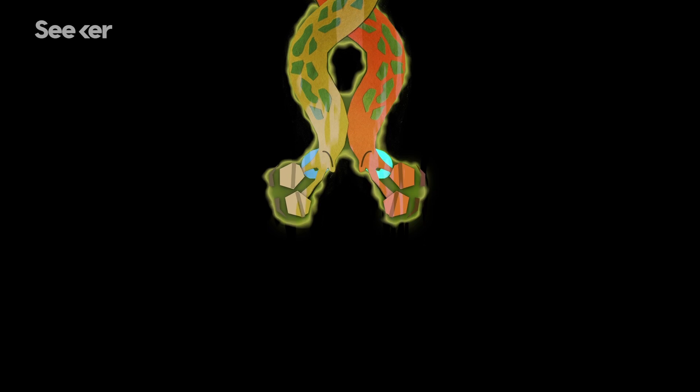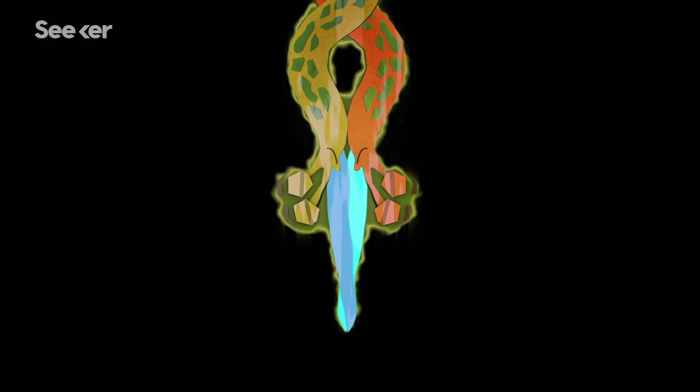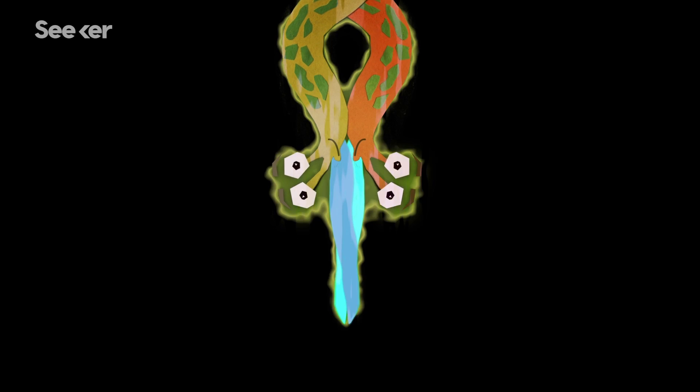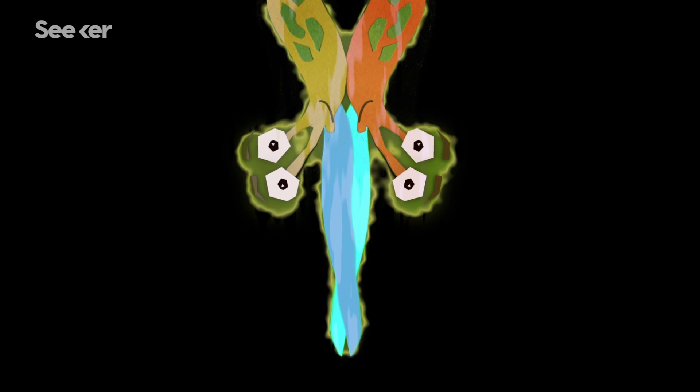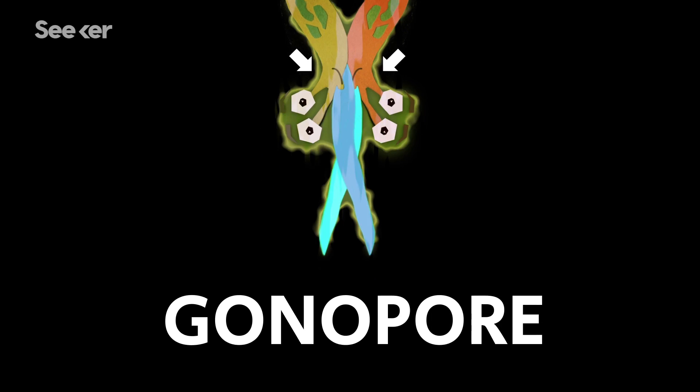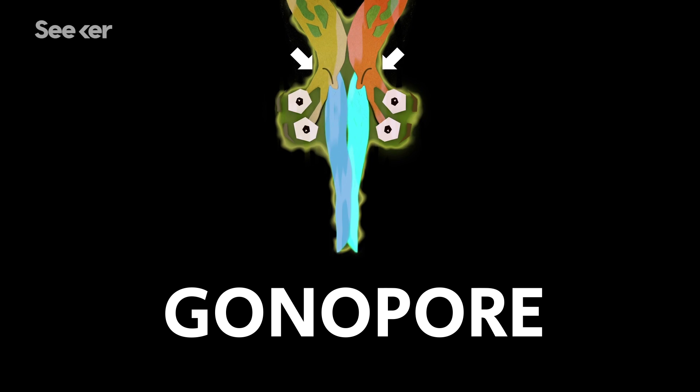As the pair hang from a string of mucus like acrobats, they start to pump fluids into their alien-esque penises and coil them together in a knot-like fashion. Wait, did I mention that leopard slug penises come out of their heads? It's called a gonopore, and it's the genital opening of many invertebrates.